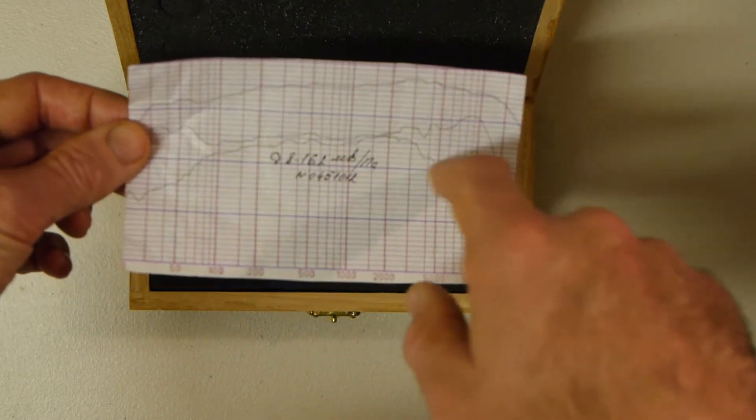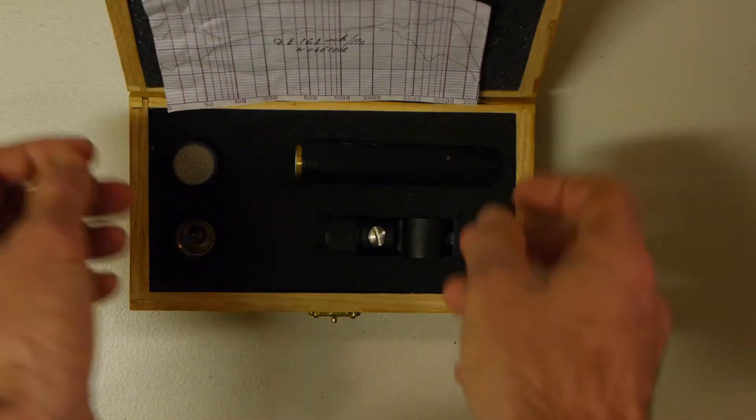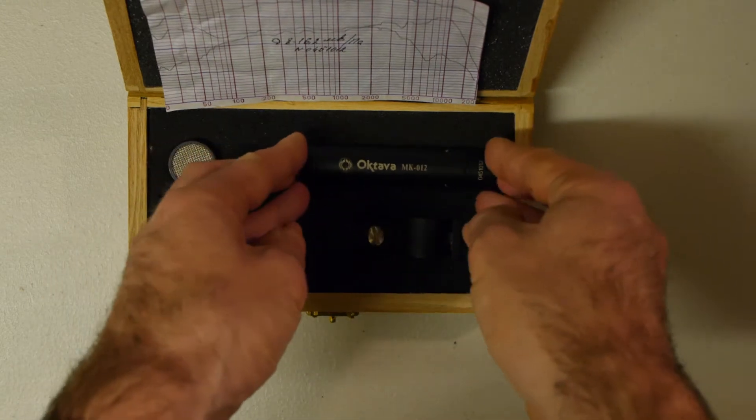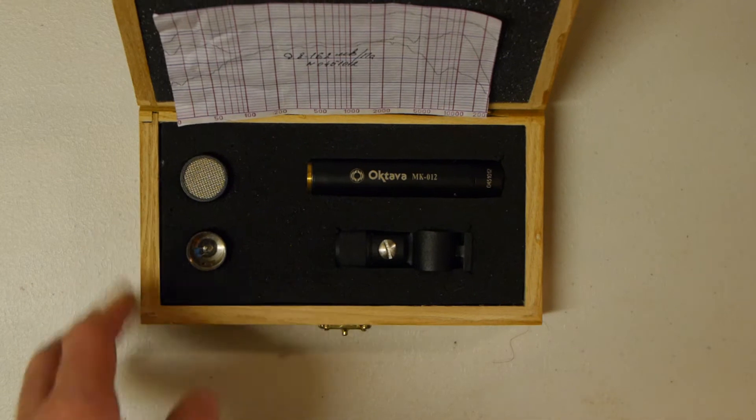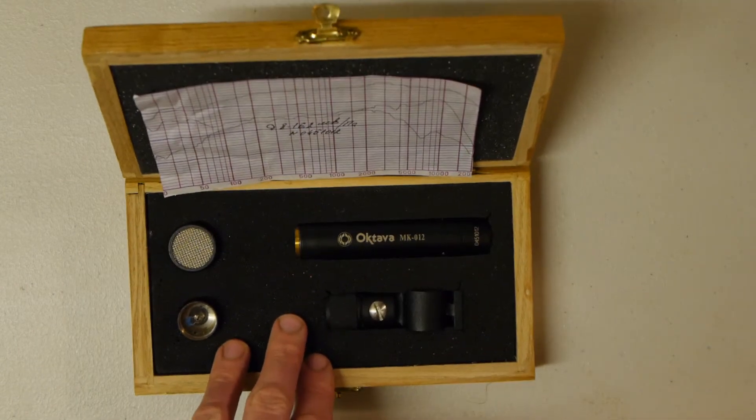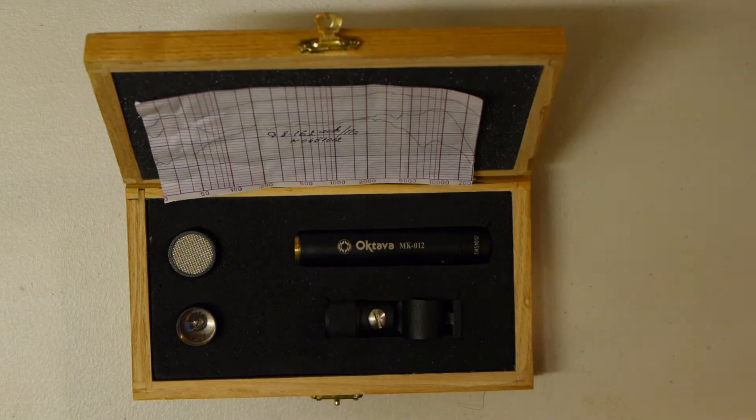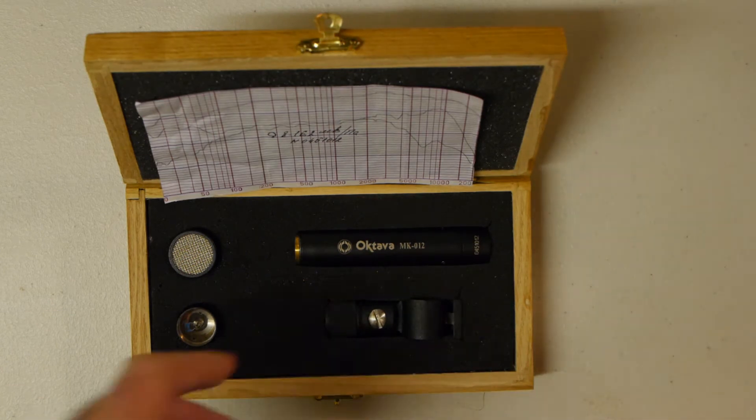Yeah, you can see these sort of lines were drawn out like that. Anyway, the Oktava is pretty famous in the low-budget world as being one of the best, super cheap options if you want to start off with a mic for indoors, a hypercardioid.